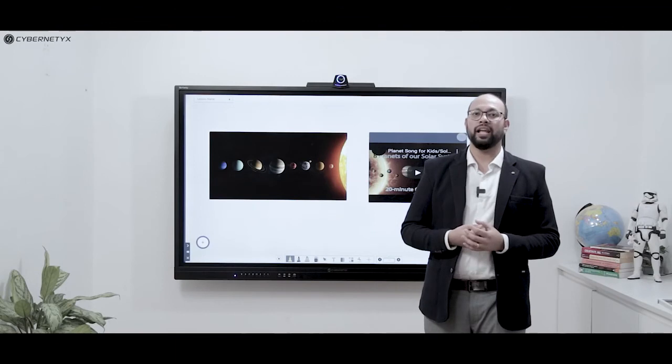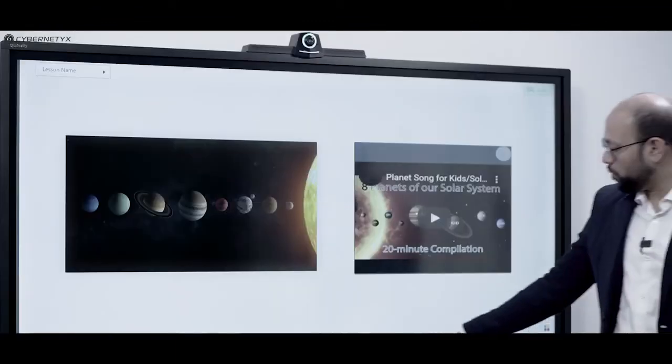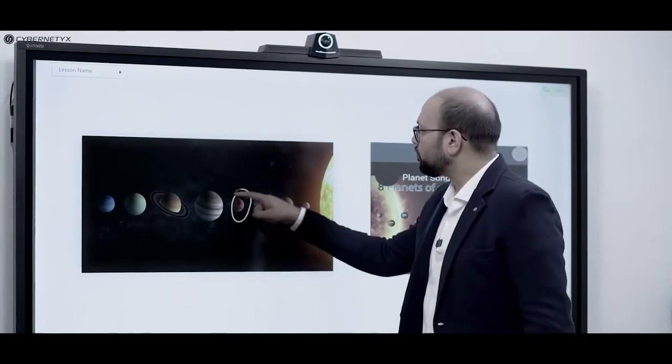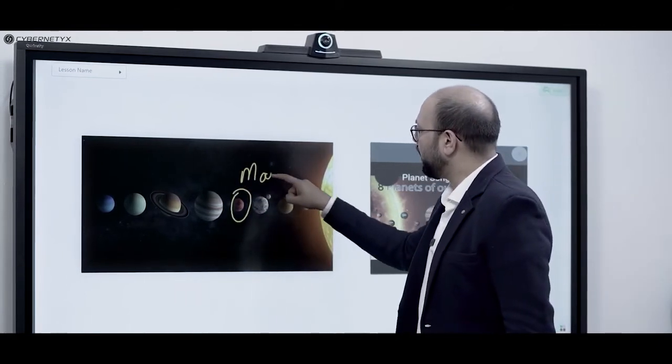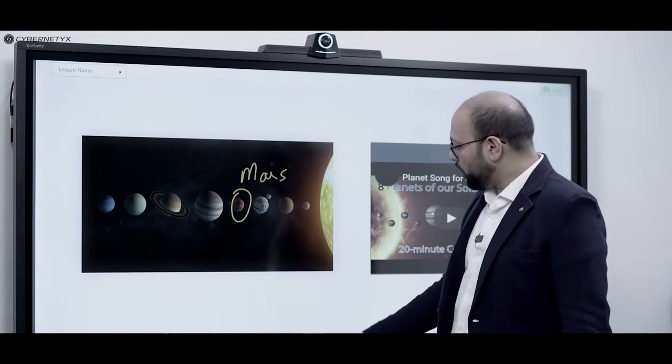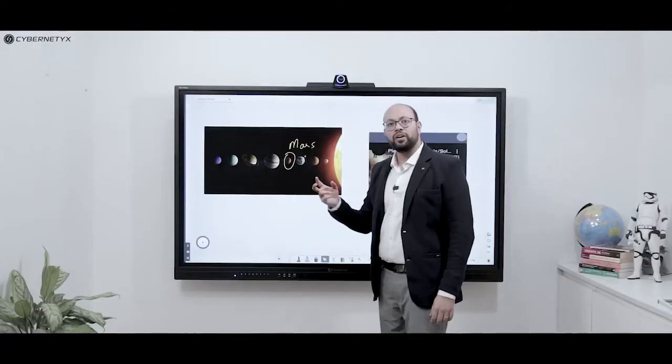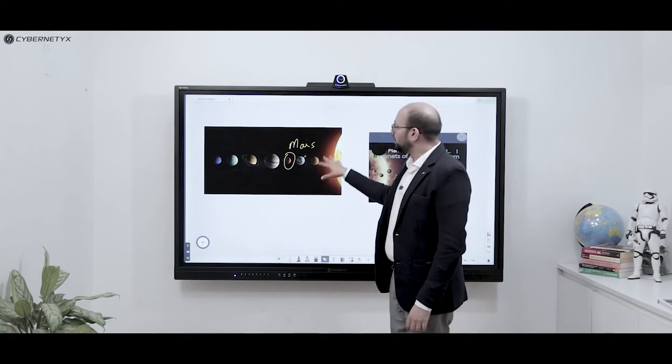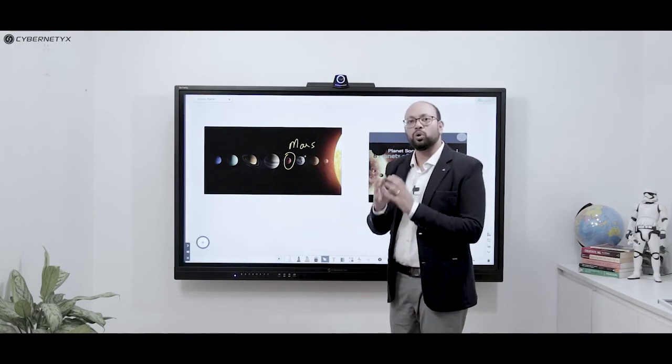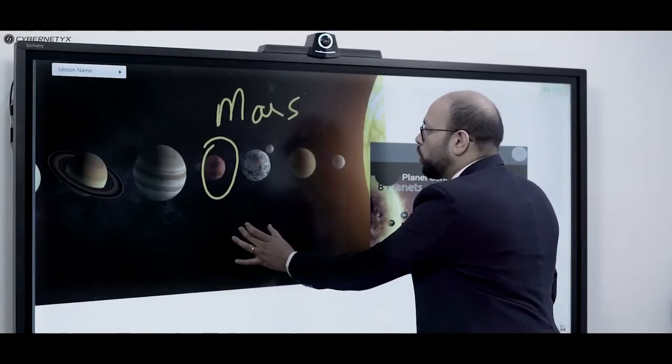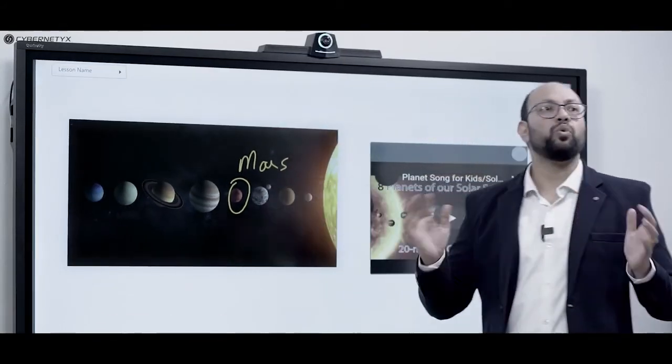Similarly, you can add multimedia content like images and videos using the import option here. Once you've added your content, you can start teaching. You can start annotating on the images. Now what you notice here is that as I move these images, the entire content moves together. So basically, the system has intelligently auto-grouped all your content together so that when you're moving or you're zooming, you don't lose the content or the content doesn't move in a different direction.